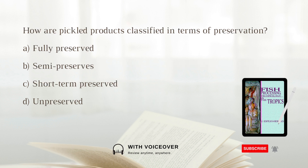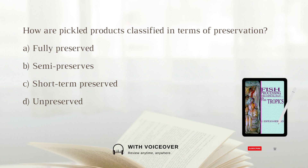How are pickled products classified in terms of preservation? A. Fully preserved. B. Semi-preserves. C. Short-term preserved. D. Unpreserved. Answer: B. Semi-preserves.